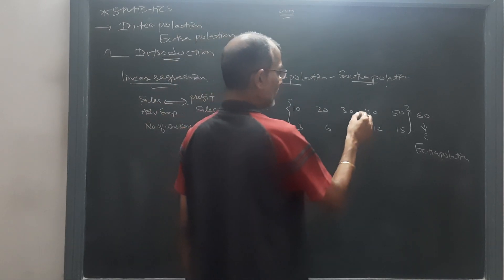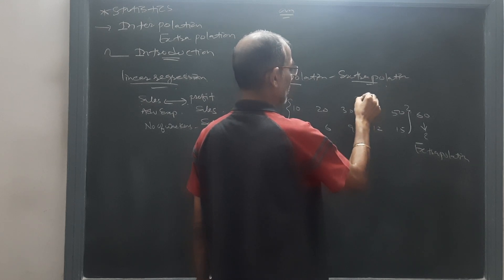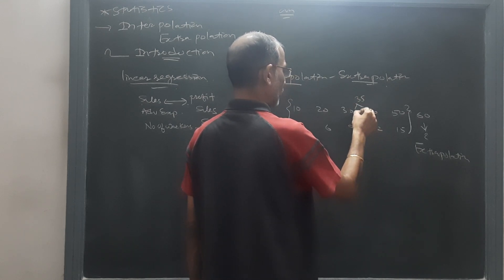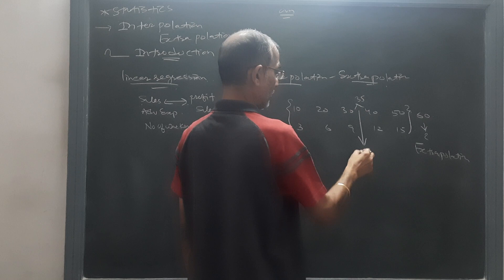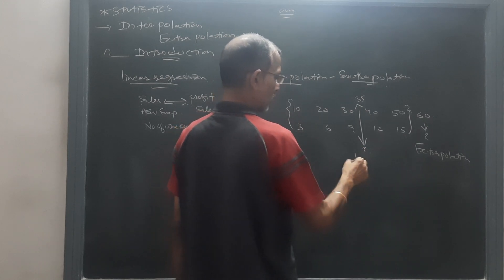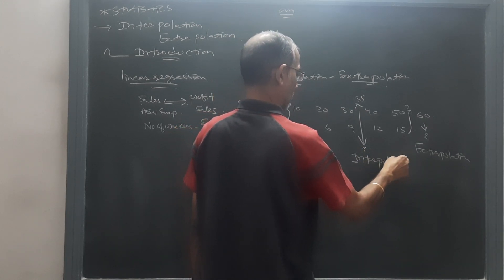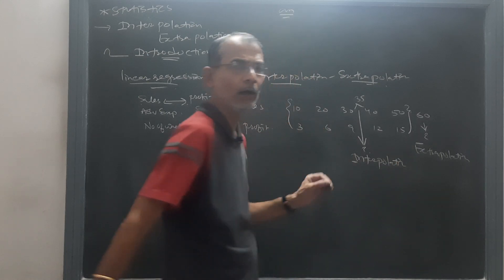But if it has been said when sales is 35, what would be the profit? So, this is called interpolation because we have to find the profit in the data which is given to us.